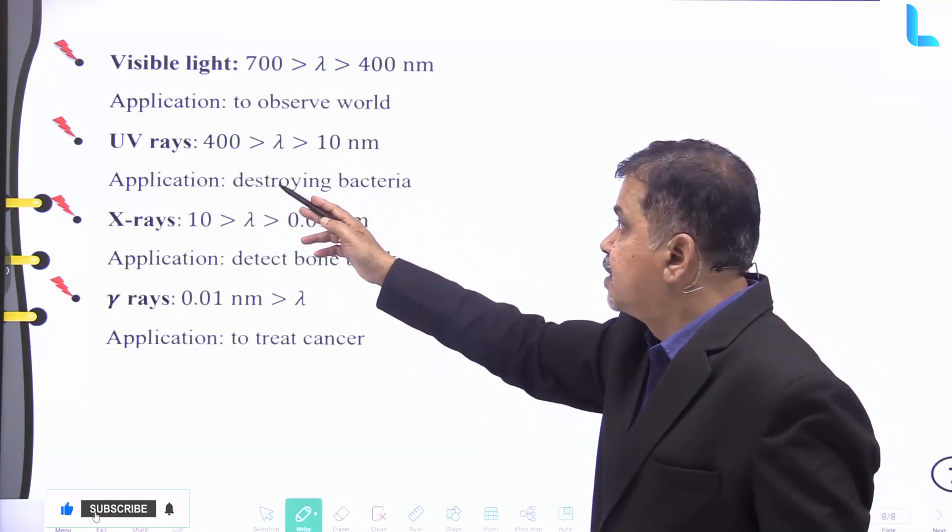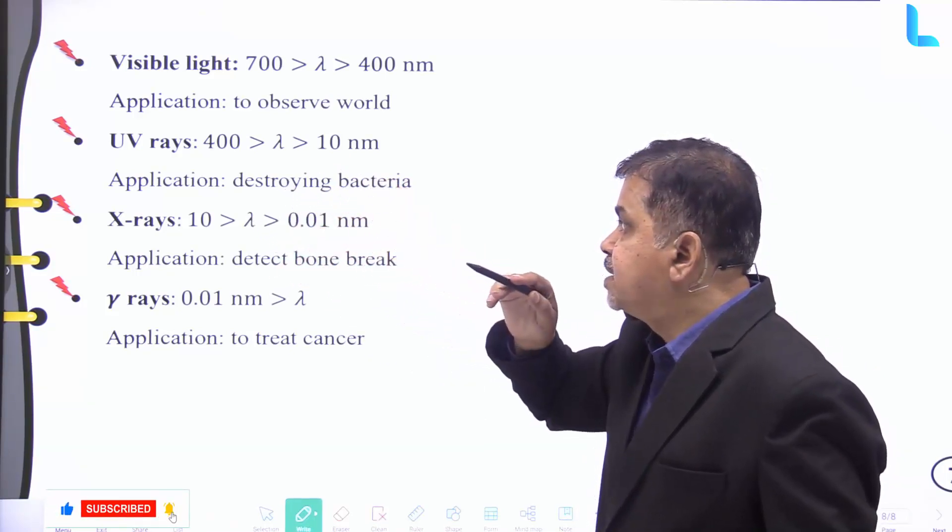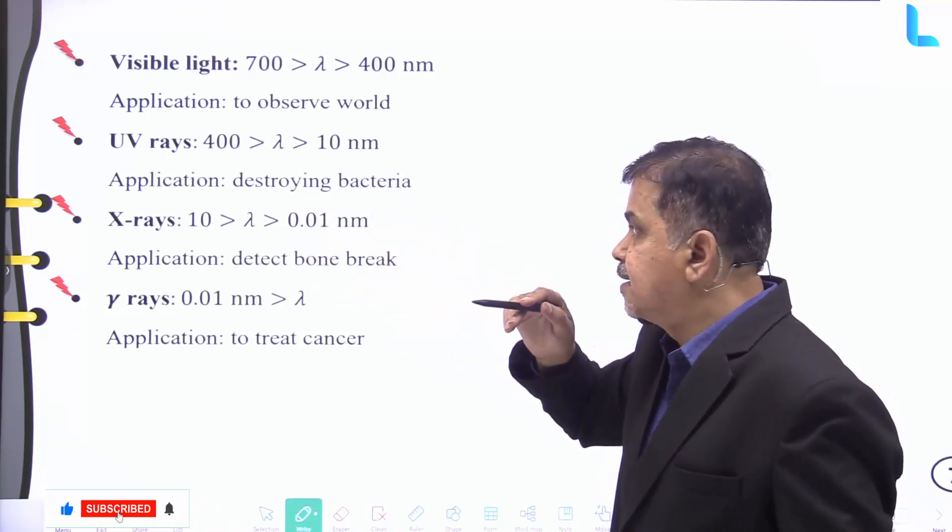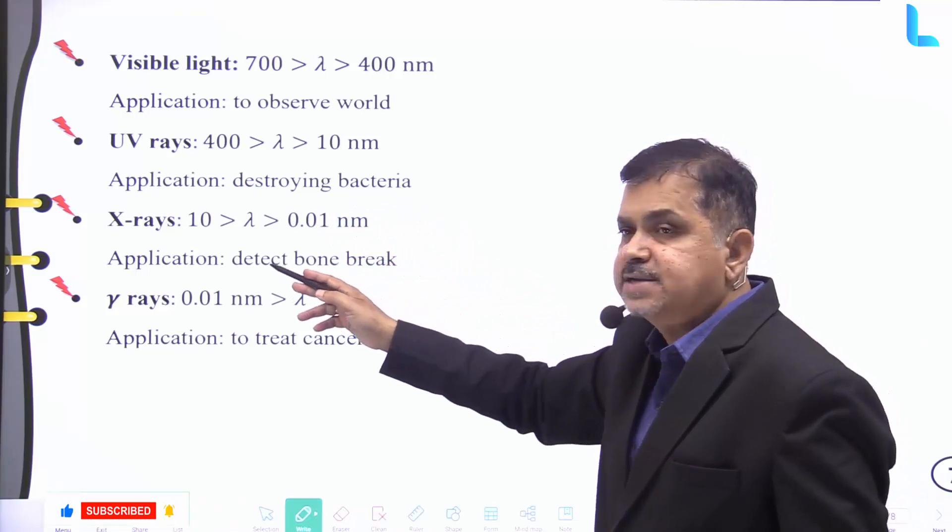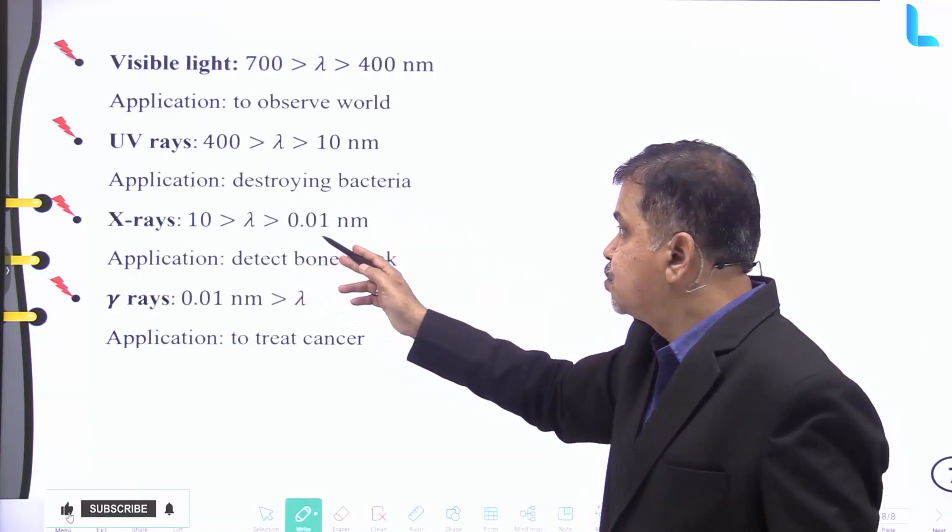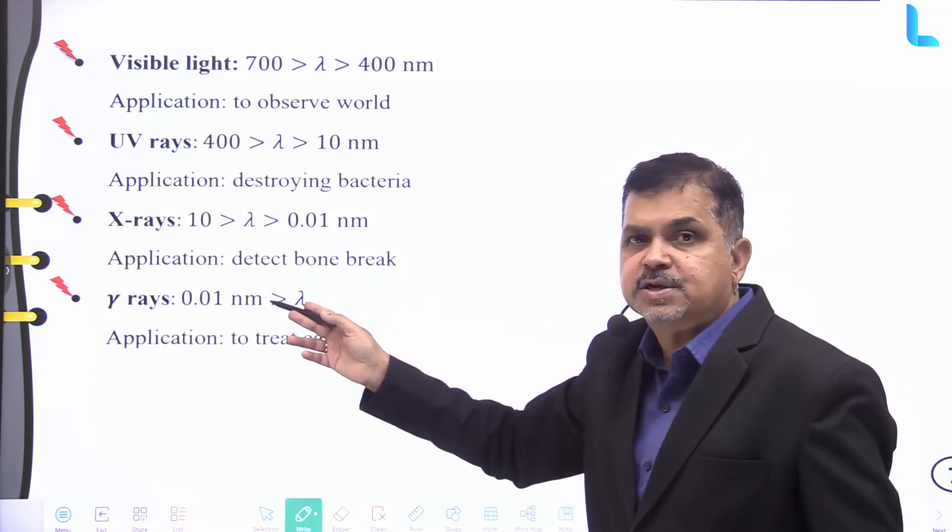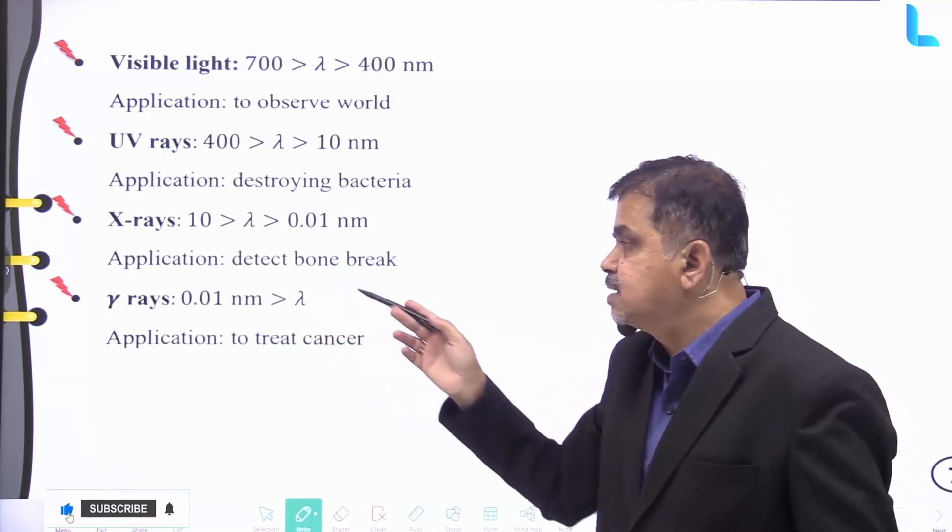The ultraviolet rays have a range of 400 to 10 nanometers, and its application is to destroy bacteria. And X-rays have a range of 10 to 0.01 nanometers, and its application is useful to detect bone breaks or fractures.